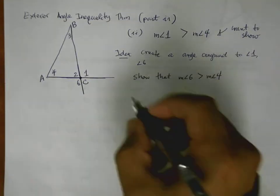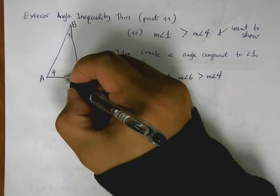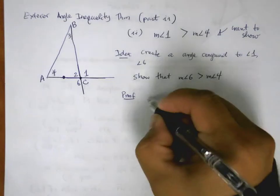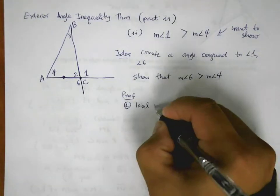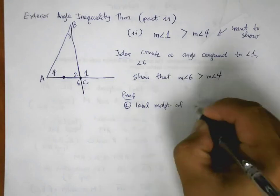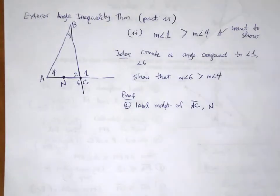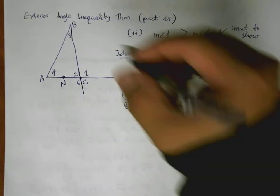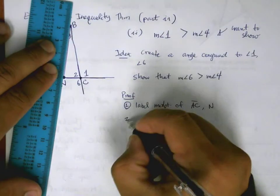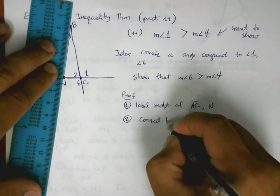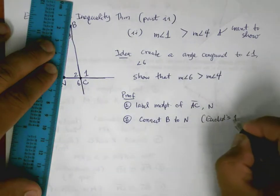So proof. And we'll get to it now. So first we are going to label the midpoint of AC. And we're going to call this N this time. Then we're going to connect B to N. And my reason here is Euclid's first postulate.